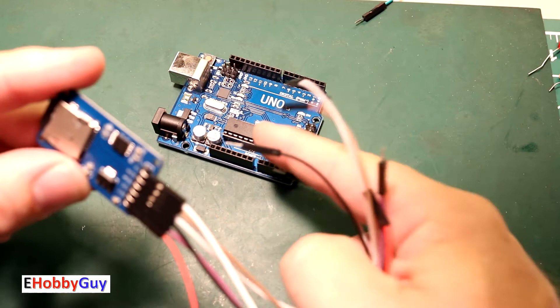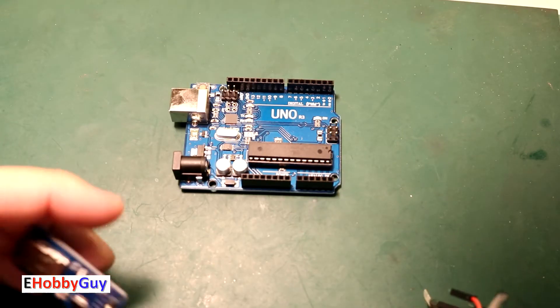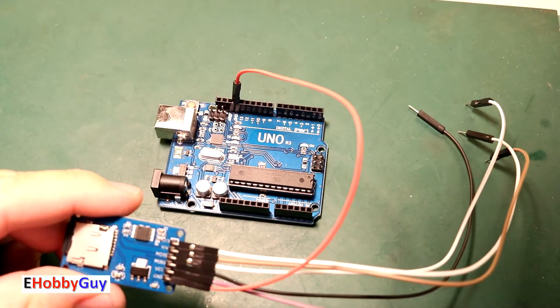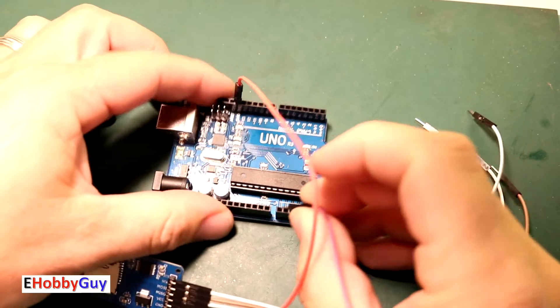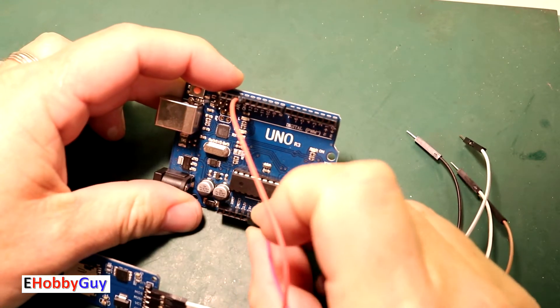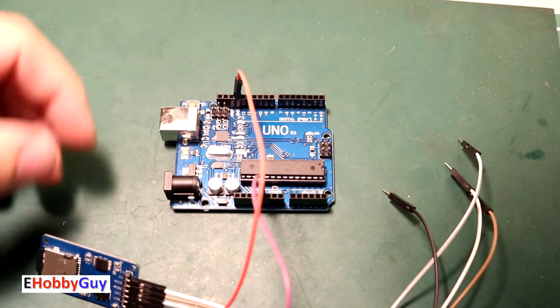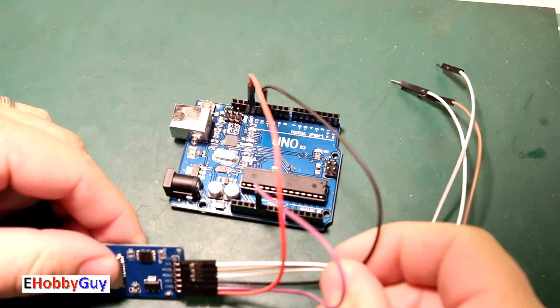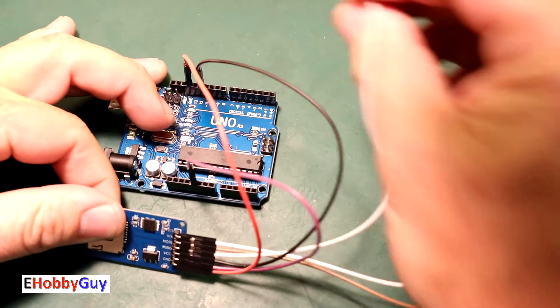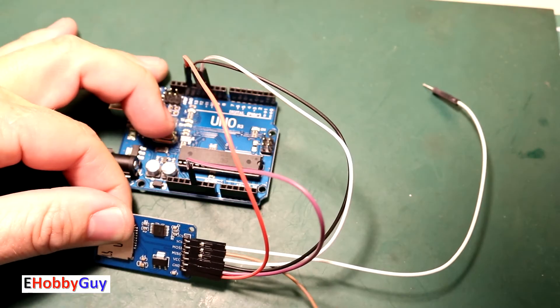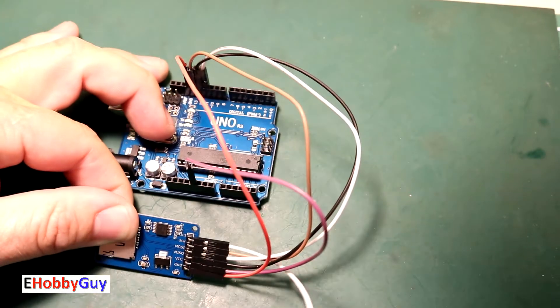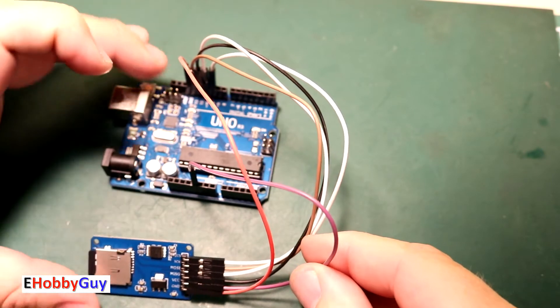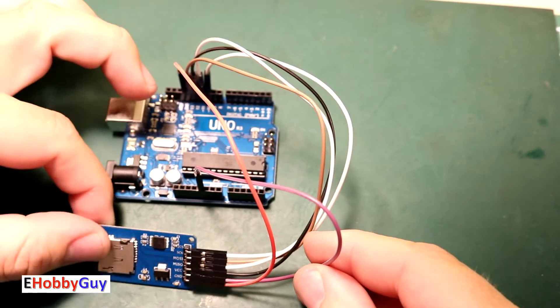Now let's wire this module into the Arduino Uno. First, the ground pin goes next to pin 13. VCC which is five volts goes to the five volt pin. MISO goes into pin 12, MOSI goes into pin 11, the serial clock goes into pin 13, and finally the chip select pin goes into pin number 10. Now it is fully hooked up and ready to write data into the SD card.